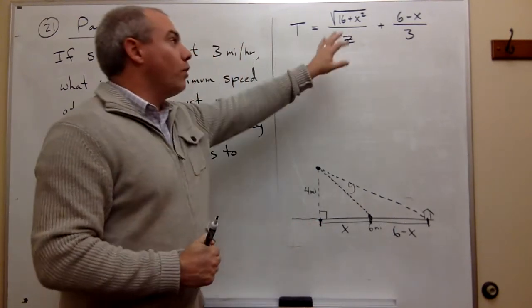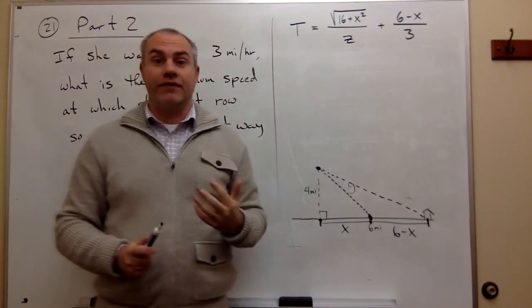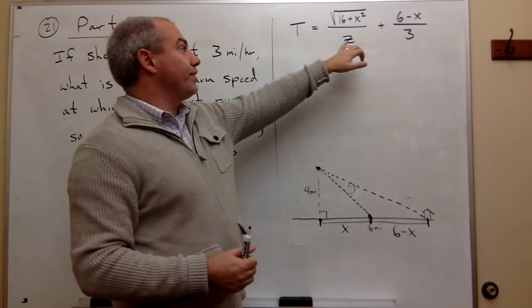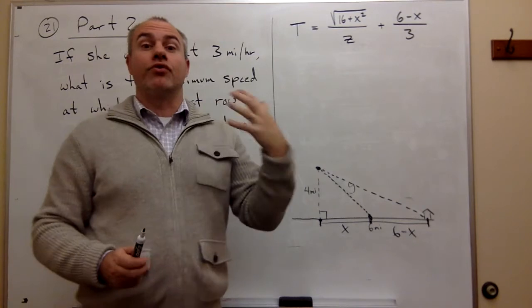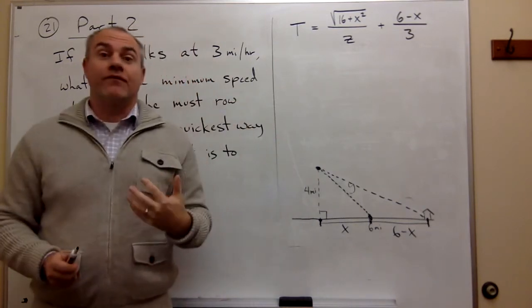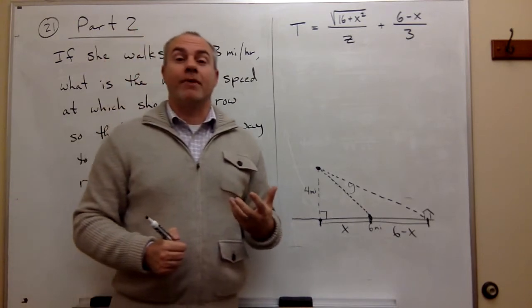So we know that x is equal to six, but we don't want to plug it in right now. We want to plug it in after we've taken a derivative, so that we can figure out what the z should be that would make that optimal. Remember, the derivative gives me information about an optimal path.